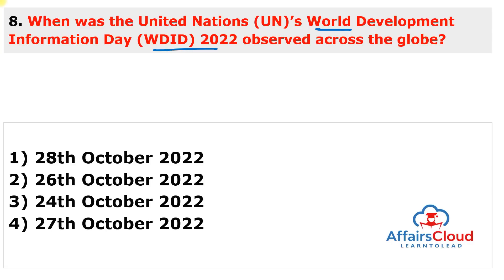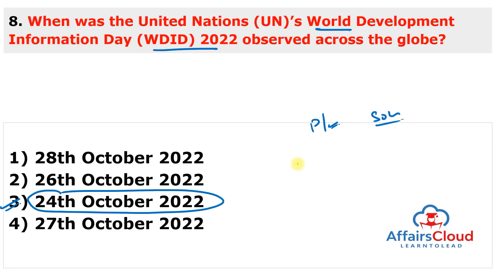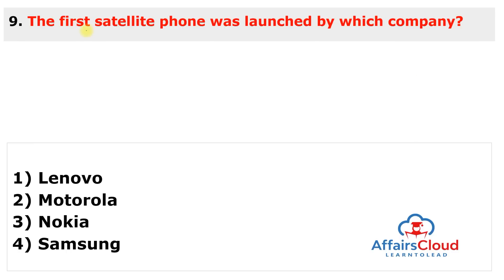Next question: when was the United Nations World Development Information Day 2022 observed? It was also observed on 24th October 2022. It aims to create awareness of world developmental problems and the need to strengthen international cooperation to solve them. The first World Development Information Day was observed on 24th October 1973. It is marked on the same day as United Nations Day, which was formed on 24th October 1945.